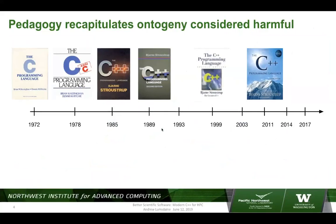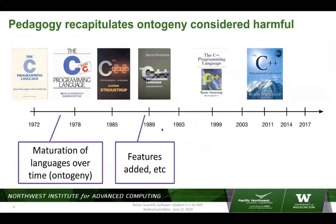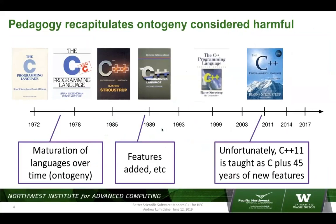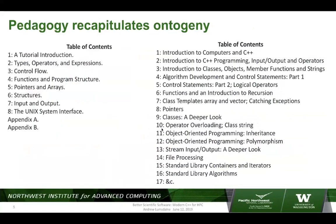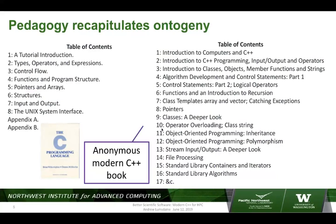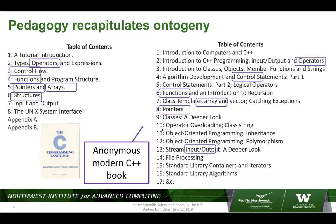A language is not just its features, and features per se aren't the source of power in a language. This flies in the face of traditional pedagogy in programming language education, where since programming languages have matured over time and added features, they get taught as C plus 45 years of new features. If you look at the table of contents in a modern C++ book, you'll see on the left hand side the table of contents from the original Kernighan and Ritchie pre-ANSI C book, and a C++ book's topics are the same in the same order. This pedagogy recapitulates ontogeny.